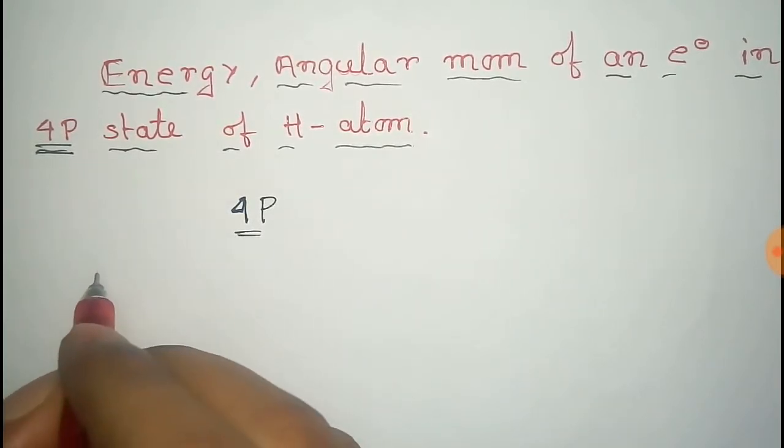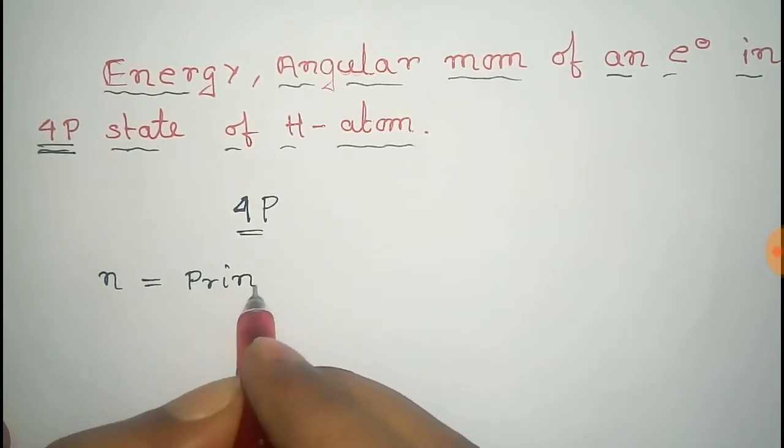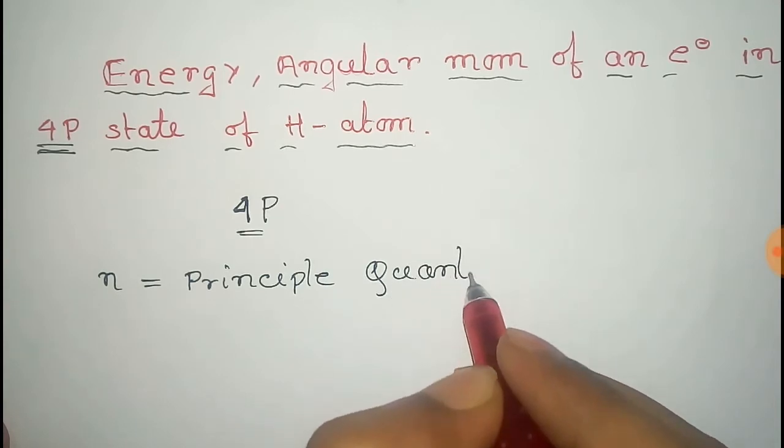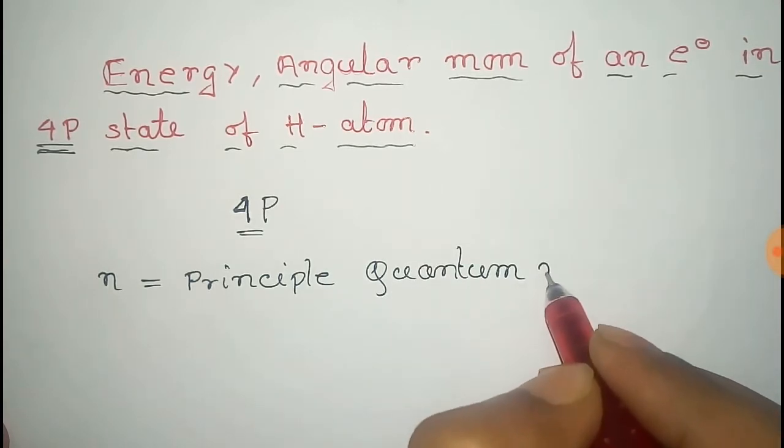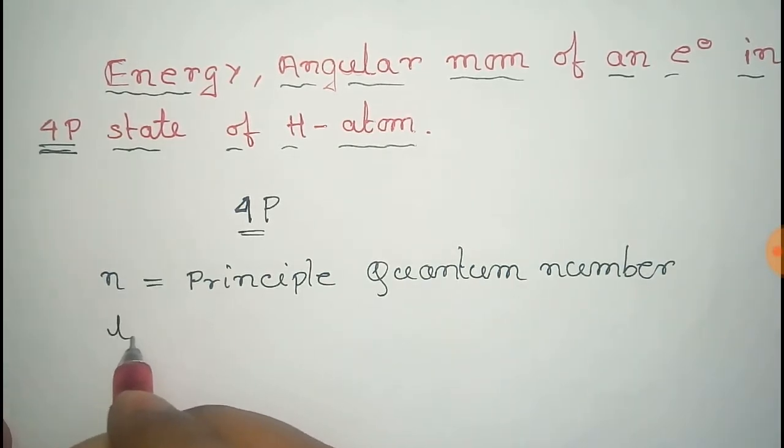First of all, consider that n is the principal quantum number and L is the azimuthal quantum number.